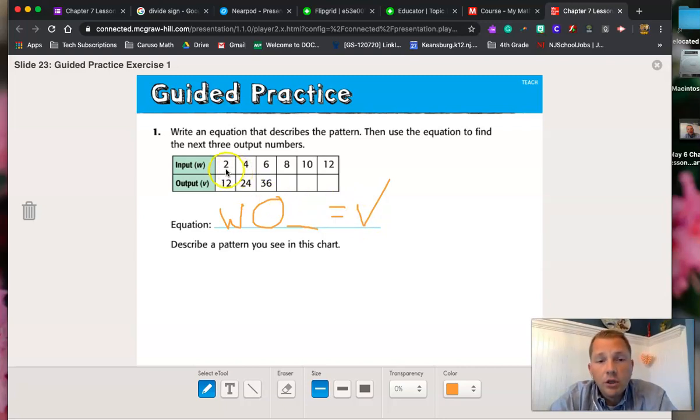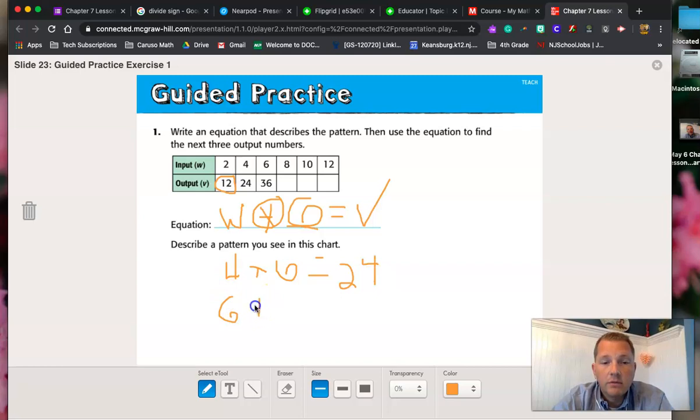So let's look. 2 and 12. If I divide 2 by 12, I'm going to get 6. If I divide 24 by 4, I'm going to get 6. Let's take a look at that. My equation is going to be something times 6 is going to give me my answer, my output. 2 times 6 gives me 12. If I were to put the 4 here, 4 times 6 is going to give me 24. If I put another 6 in, 6 times my other input, which is 6, is going to give me 36. And if I keep on using my equation here, W times 6 equals V.